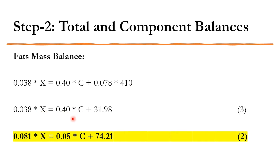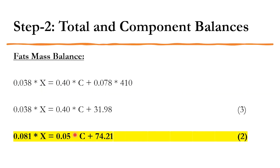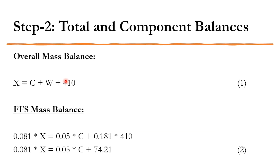We have three equations and three unknowns: x, c, and w. The degree of freedom is zero (number of variables minus number of equations = 0). Simultaneously solving these equations gives: feed to the system x = 920.8 g, cream removed in centrifugation c = 7.528 g.